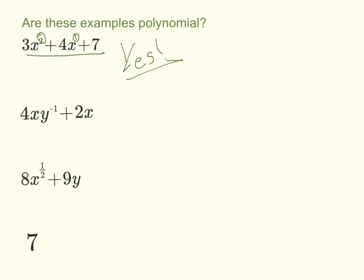Now our next example here, something should jump out to you right away. You know what it is? What's this negative exponent here? Now that's one of the red flags. If it's got a negative exponent, it cannot be a polynomial.